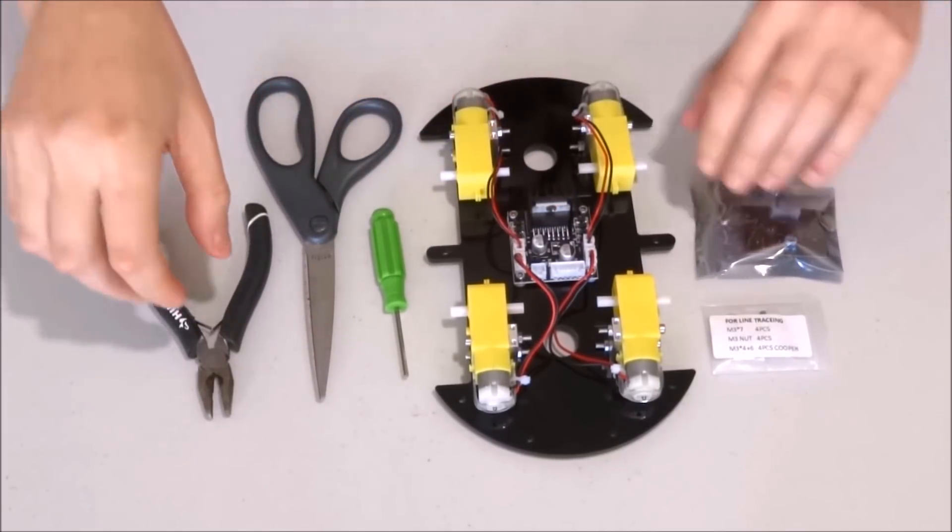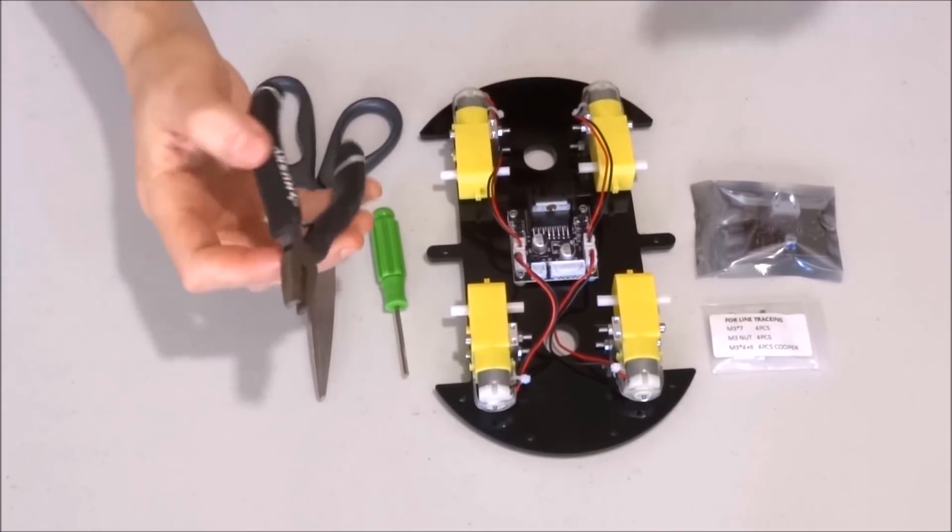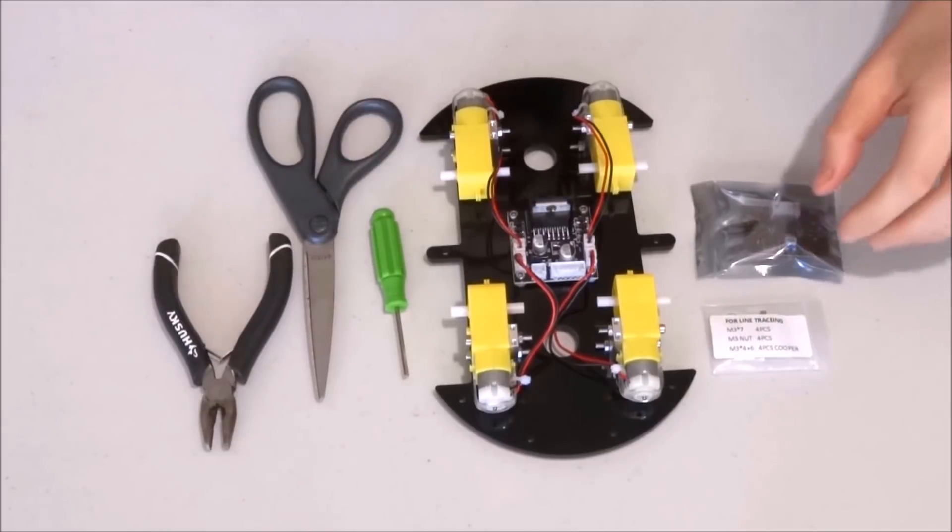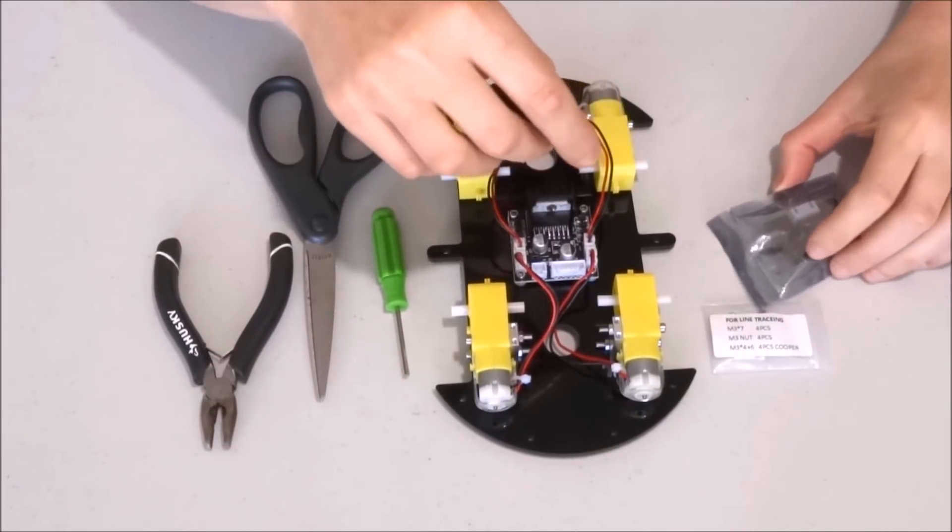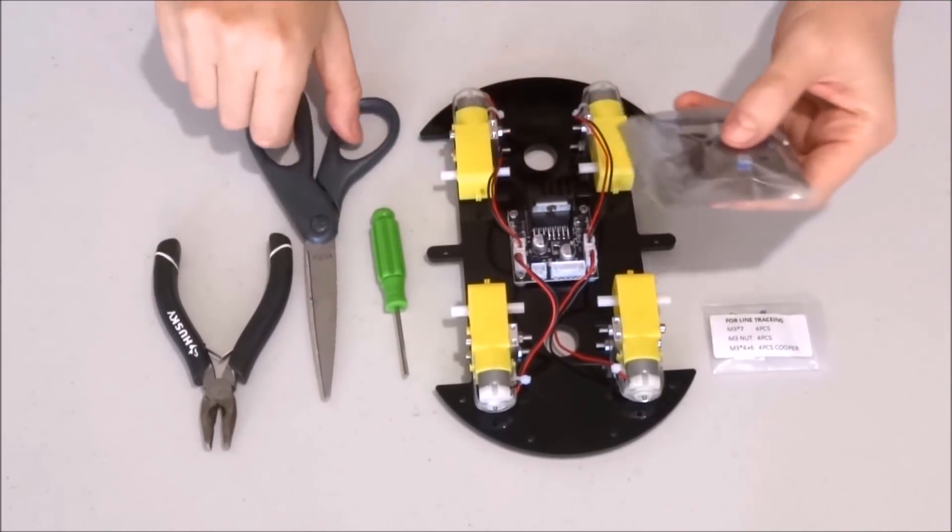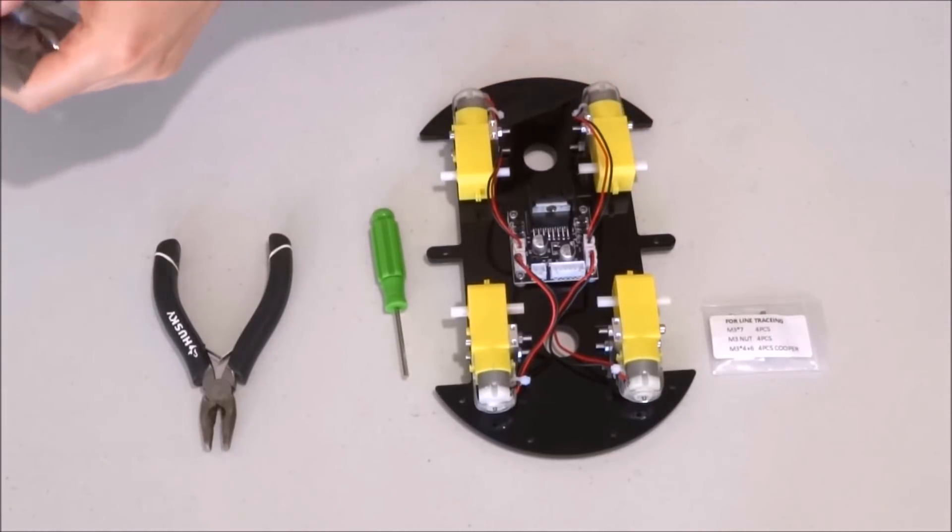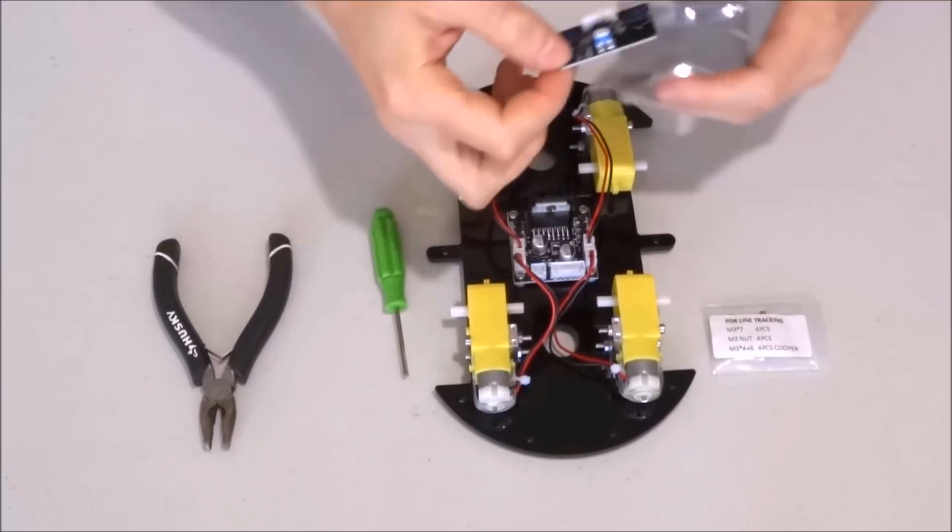I prefer to do a nice clean cut and I just have it prepared in case I need it. Some pliers. I will start by opening the bag containing the line tracking sensors.